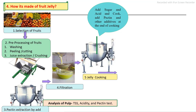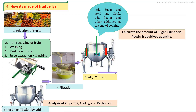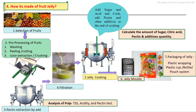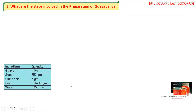Standardization is carried out and other ingredients are added. Cooking is done in steam-jacketed kettles; sugar and citric acid are added initially, then pectin is added at the end, followed by other additives. The final product is then transferred into jelly molds, followed by packaging, labeling, and secondary packaging.